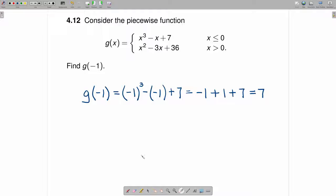And so when the question asks what is g of negative 1, the answer is g of negative 1 is equal to 7.